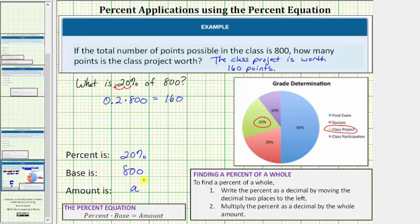Let's use the variable a for the amount. And now if we set up the equation, we would get the percent, which is 20%, times the base, which is 800, equals a.